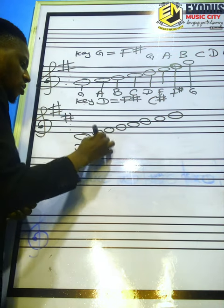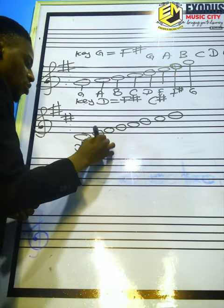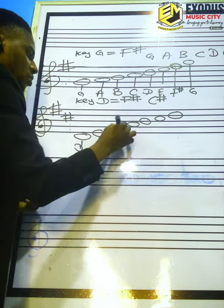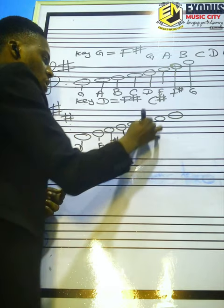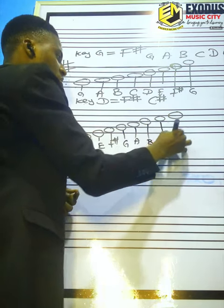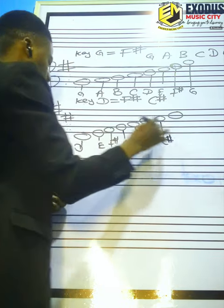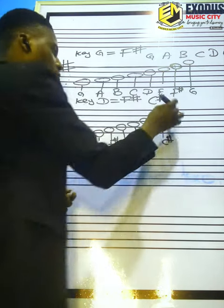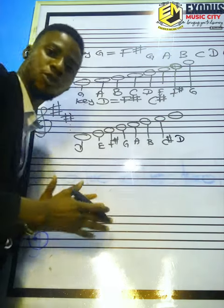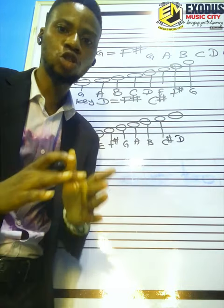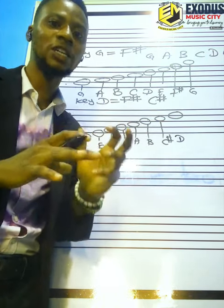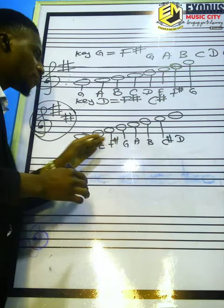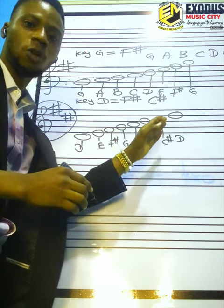Then write out the notes: D, then E, then F sharp, then G, A, B, C sharp — because C is sharp in the key signature — then D. That is the construction of scale with key signature.